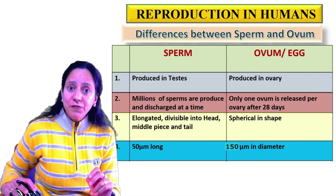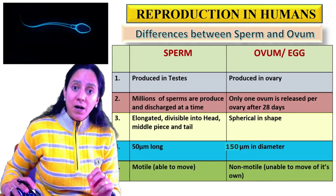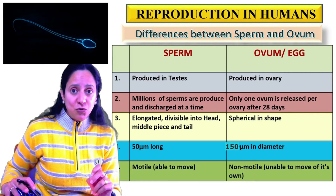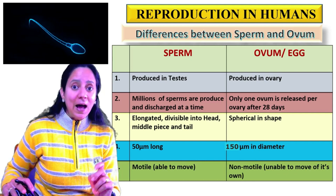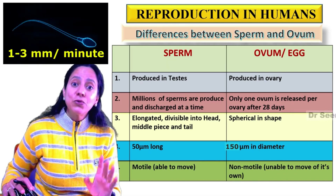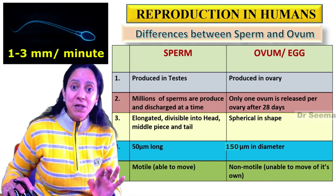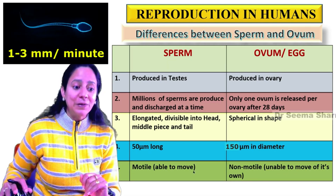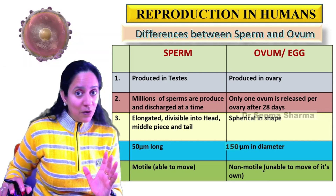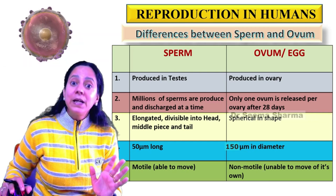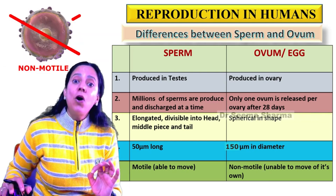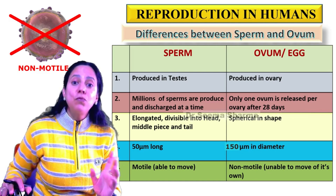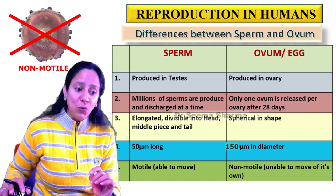The next point of difference is motility. Sperms are motile — they are able to move, and their speed is 1-3 mm per minute. On the other hand, the egg or ovum is non-motile; it is not able to move on its own.